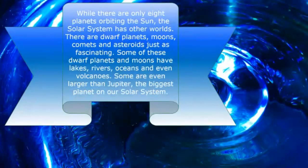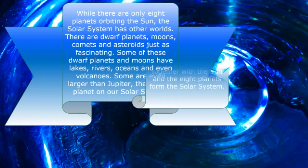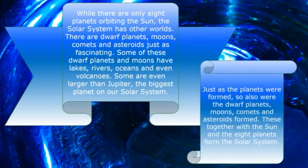While there are only eight planets orbiting the sun, the solar system has other worlds. There are dwarf planets, moons, comets, and asteroids — just as fascinating. Some of these dwarf planets and moons have lakes, rivers, oceans, and even volcanoes. Some are even larger than Jupiter, the biggest planet in our solar system. Just as the planets were formed, so were the dwarf planets, moons, comets, and asteroids. These, together with the sun and the eight planets, form the solar system.